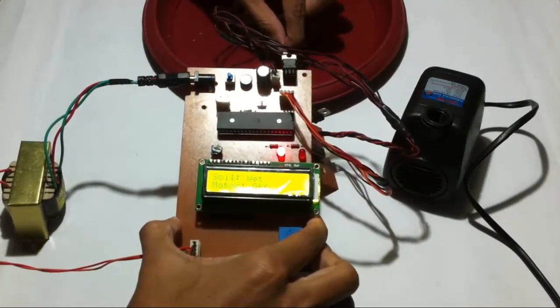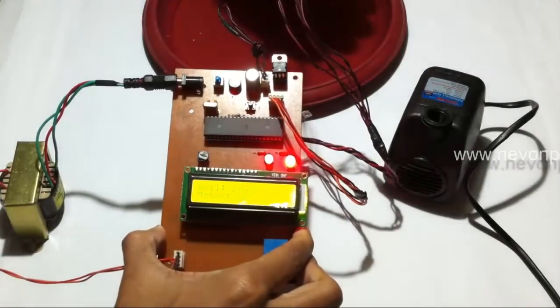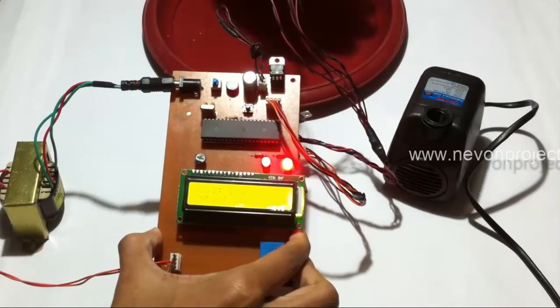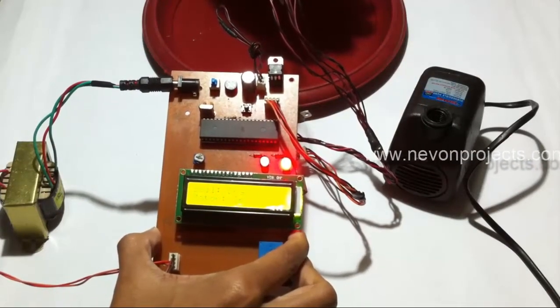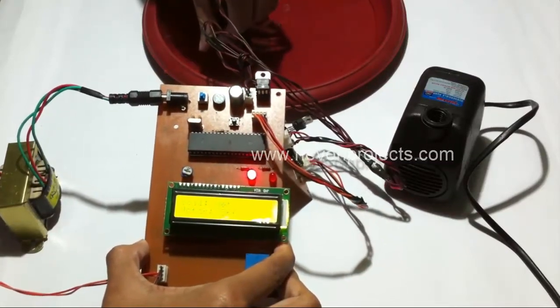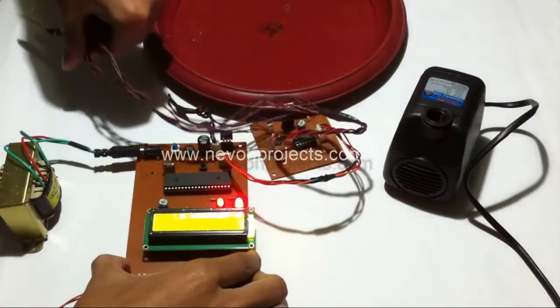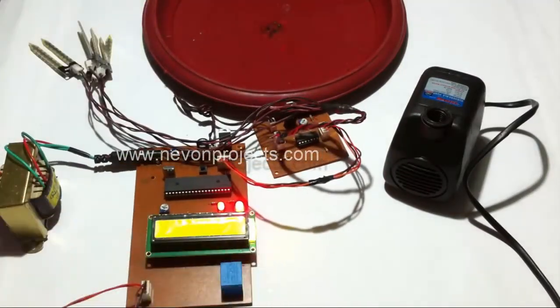Let's remove the sensor. As soon as I remove the sensors and it detects that there's no moisture or moisture content is low, it turns on the motor. And again when I insert it, this is used to have an automated irrigation system.